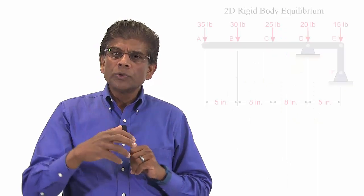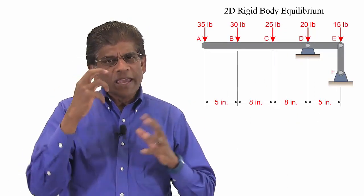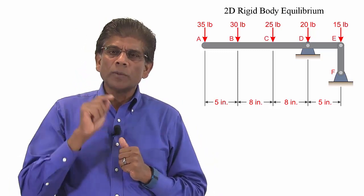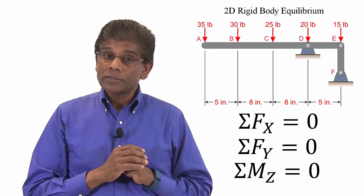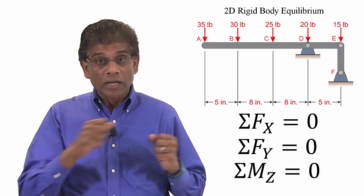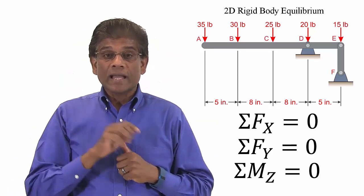We then moved on to two-dimensional rigid body equilibrium. Since we can't ignore the dimensions of a rigid body, we should account for the moment. So, we ended up having three equations. Two equations account for the translations along x and y axis and one for the moment about the z axis.